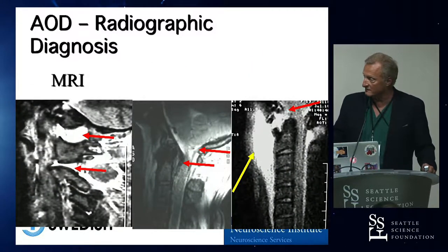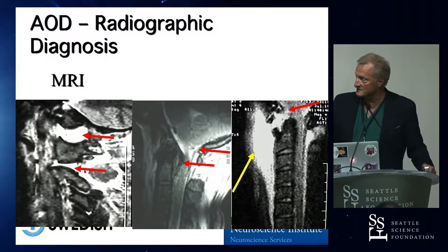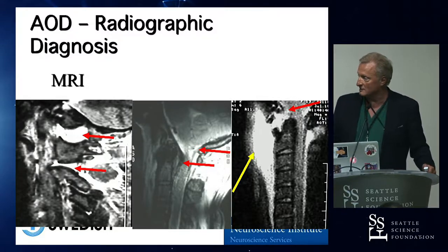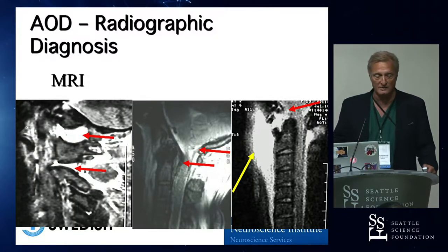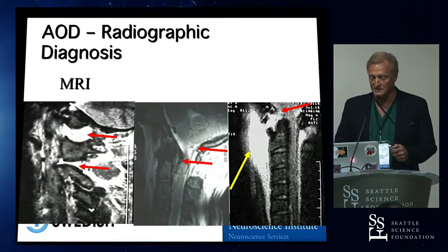You can usually see these very nicely on MRI scans due to hematoma, ligament disruption, and, God forbid, cord signal changes.